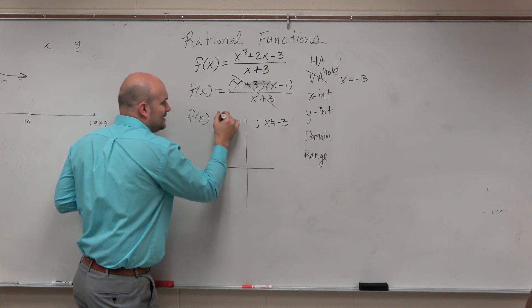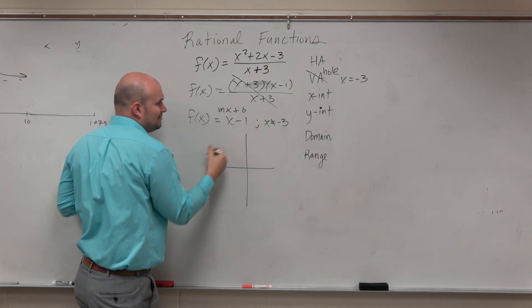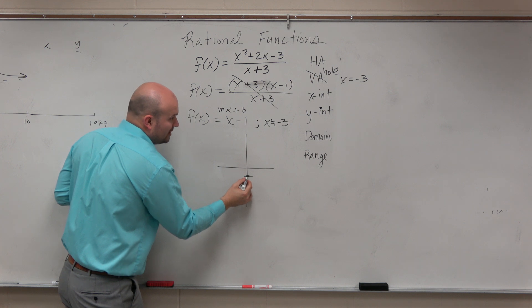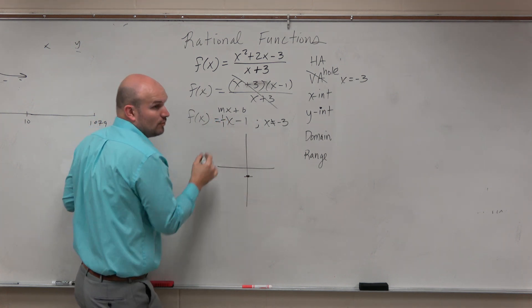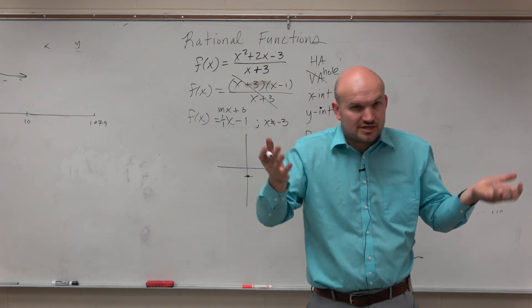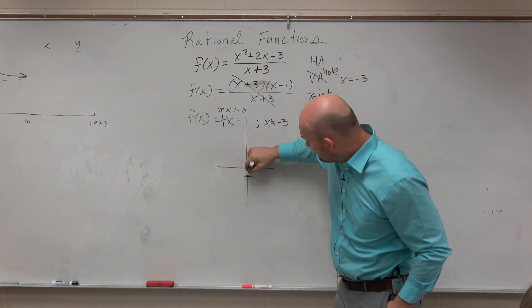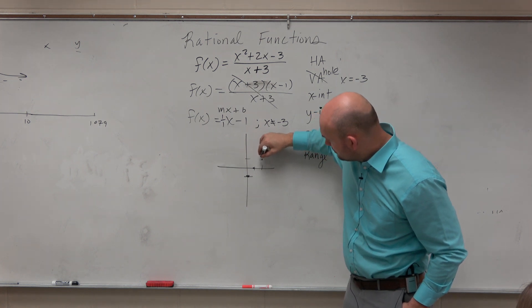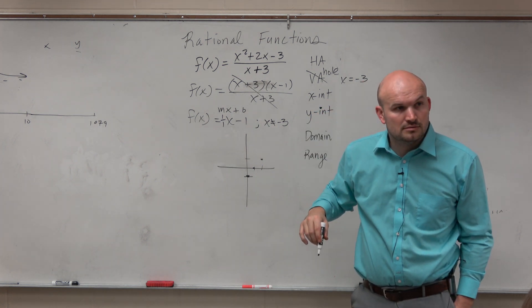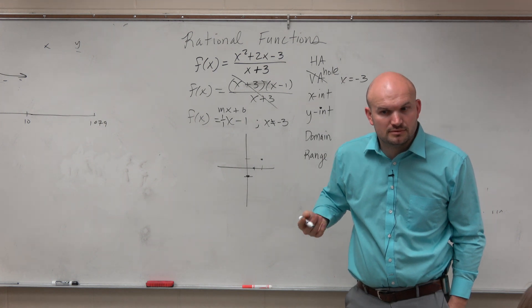Right? So y equals mx plus b. b is your y-intercept. Go down to negative 1. m is your slope. Oh, crap, there's not an m there, right? But we can always write it as 1 over 1, right? Rise over run, change of y over change of x. So from here, we go up 1 over 1. Up 1 over 1. Is that always true? If there's no denominator, there's no more.